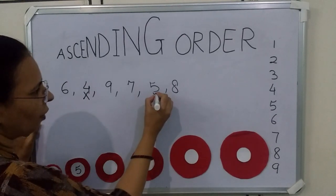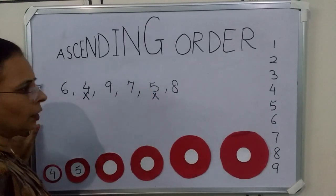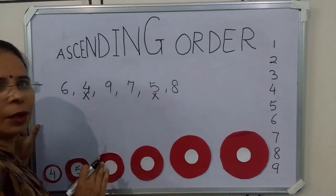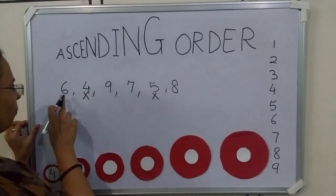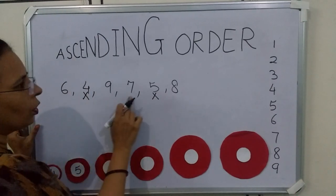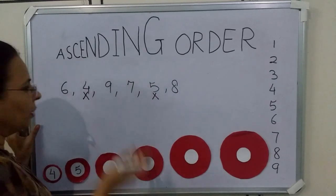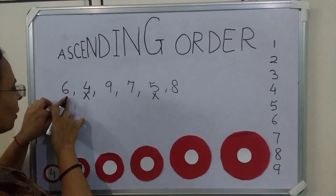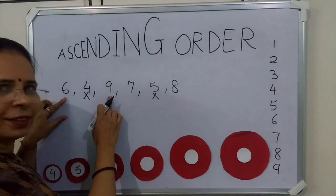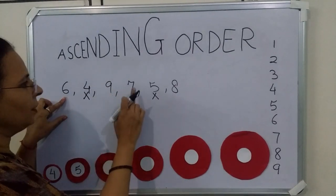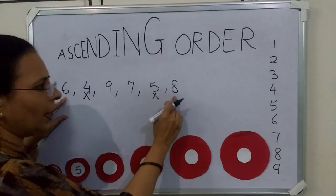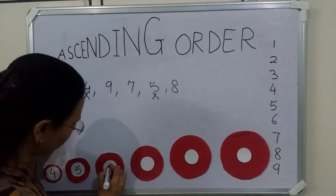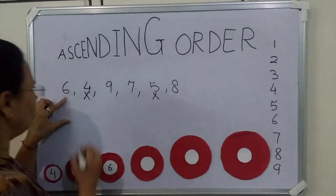5 we have written, so we will cut it. Now we have to find the smallest number from these 4 numbers. We will take 6 first. Is 6 smaller than 9? Yes. 7? Yes. 8? Yes. It means we have to write 6.